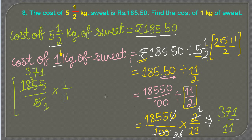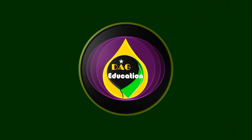371 is not divisible by 11, so the answer to our question is rupees 371 upon 11. Thank you for watching this video. If you like our videos, please subscribe to our channel and don't forget to ring the bell for more educational video notifications.